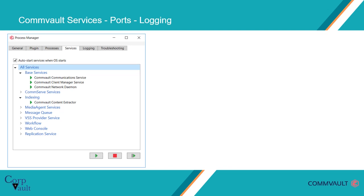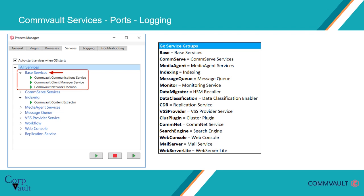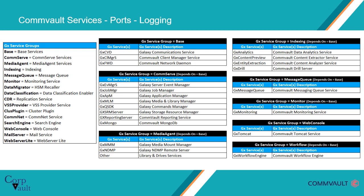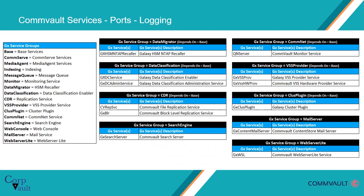Let's get back to Process Manager. If you notice, the Commvault services are grouped and tagged with a name. These are some of the service groups that we cataloged. Under these service groups, the services are aligned. You can stop and start services of a particular group. Please note, if base services are stopped, then all other dependent services will also get stopped. Let's check what service is aligned under which service group — these are the services tagged under each particular service group.